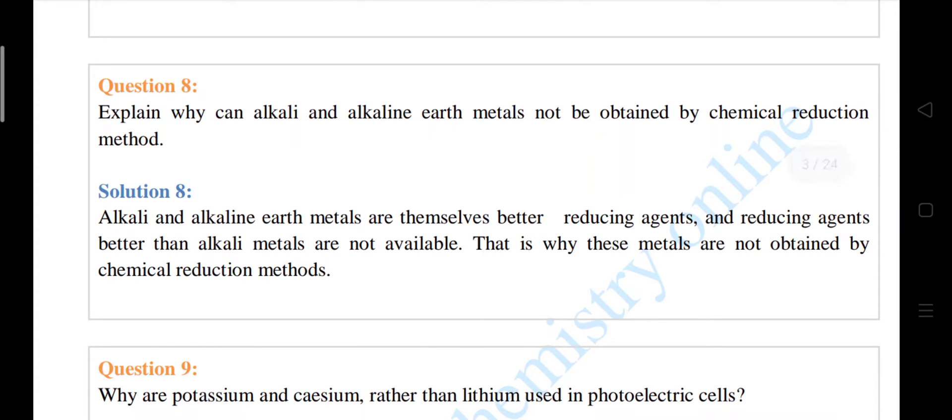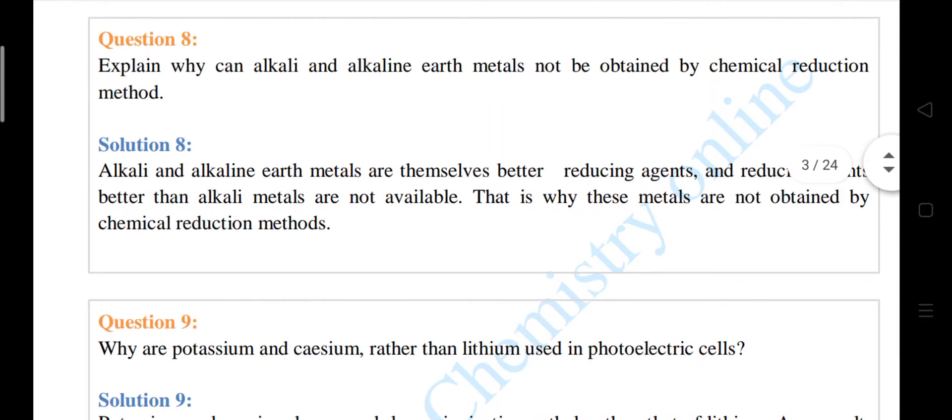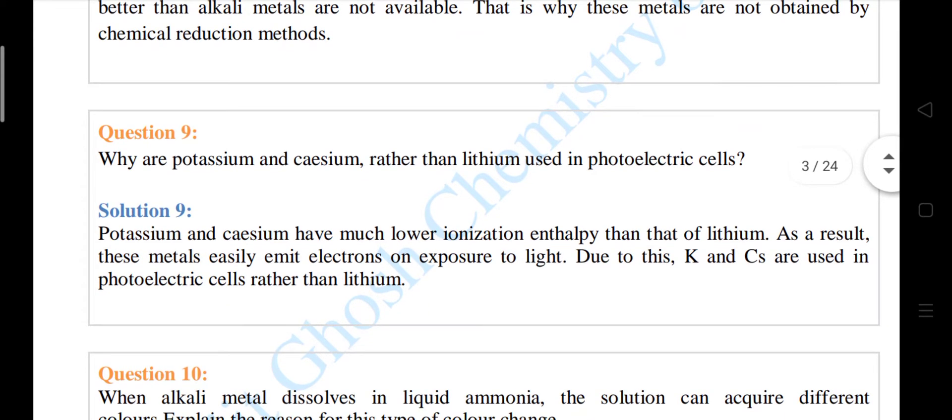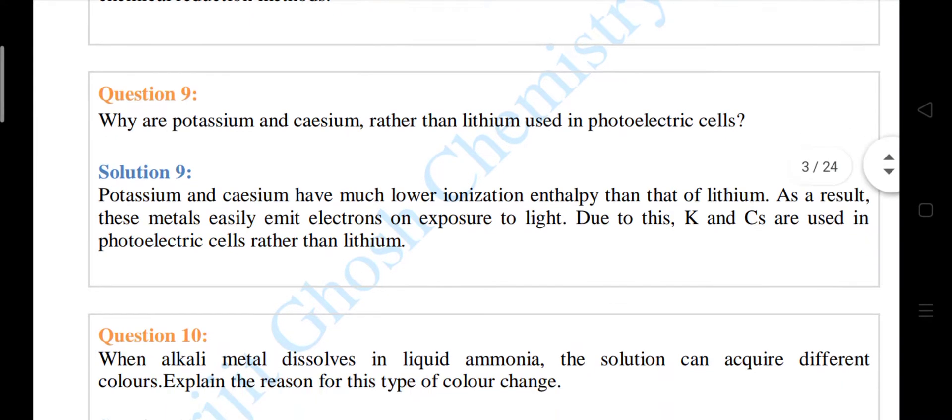Question number 8. Explain why can alkali and alkaline earth metals not be obtained by chemical reduction method? They are highly reducing agents therefore.